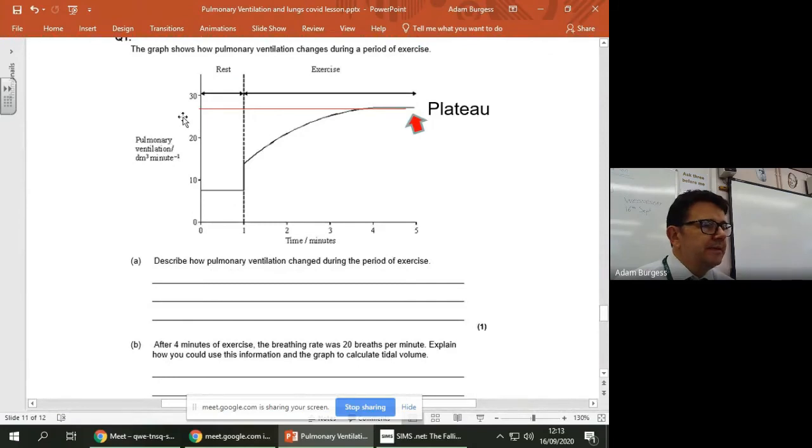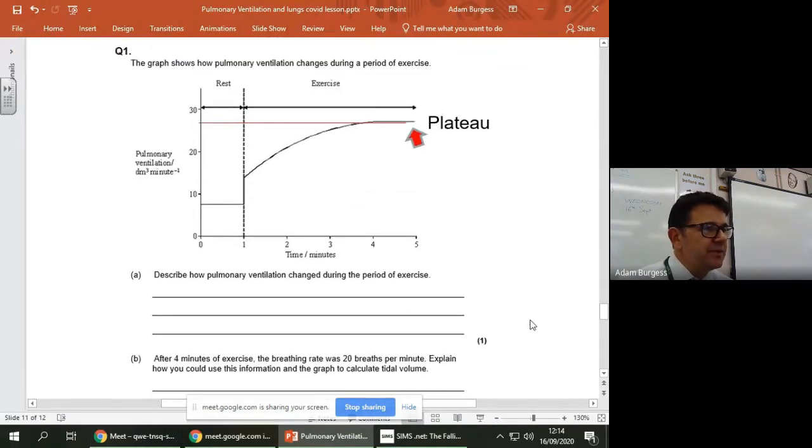So in terms of the question, okay, it would be 27 divided by the breathing rate, which is 20. But anyway, there you go. So that's how you would use that graph.